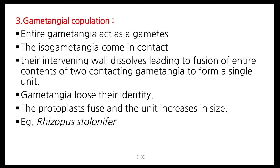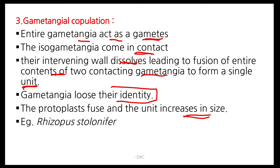Gametangial copulation: entire gametangia act as gametes. The isogametangia come in contact, then their intervening wall dissolves, leading to fusion of the entire content of the two contacting gametangia to form a single unit. Gametangia lose their identity; the protoplasts fuse and the unit increases in size. This is present in Gymnocotina, such as Rhizopus.